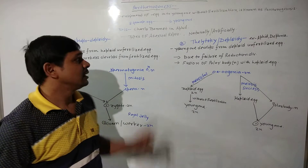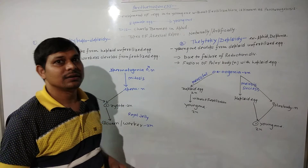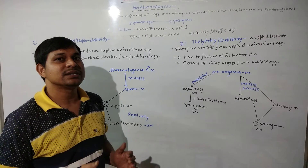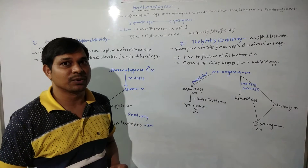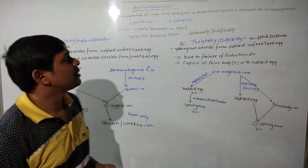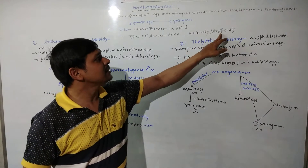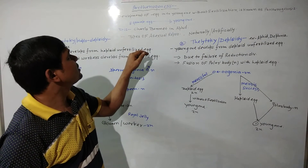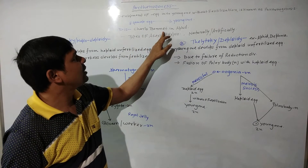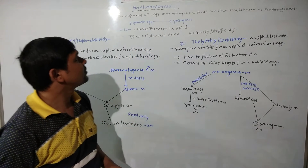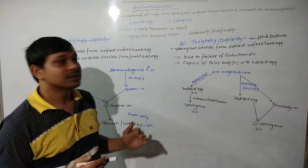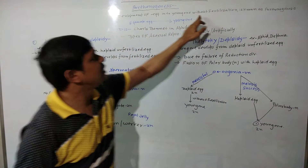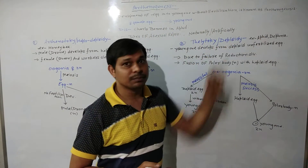Hello students. In this lecture we will discuss Parthenogenesis. Parthenogenesis is a type of asexual reproduction and it occurs naturally as well as artificially. Parthenogenesis was discovered by Charles Bonnet in Aphid. Development of egg into young one without fertilization is known as Parthenogenesis.